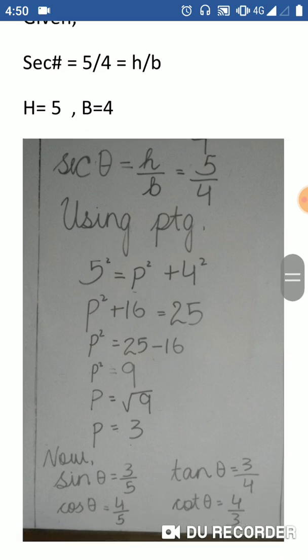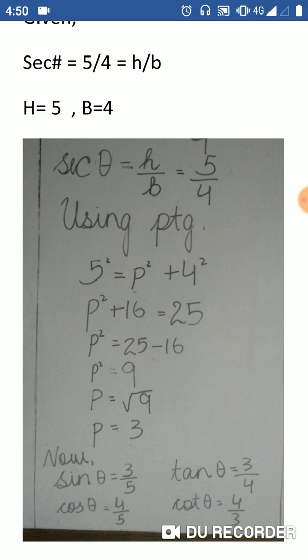cot theta equals 5 by 4. Find: sin theta minus 2 cos theta divided by tan theta minus cos theta. The answer equals 12 by 7.